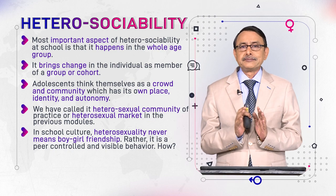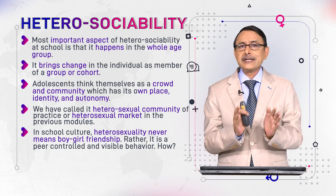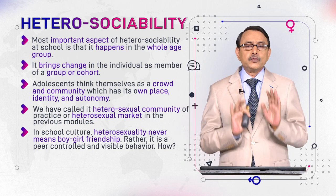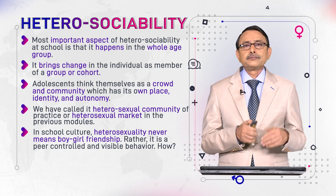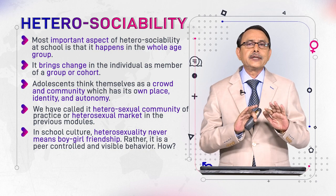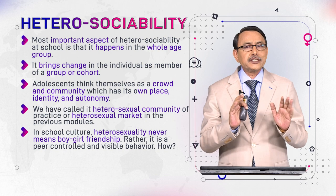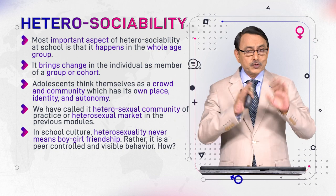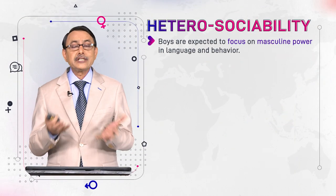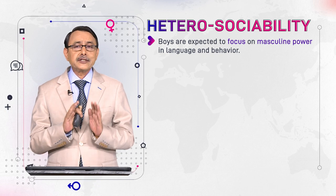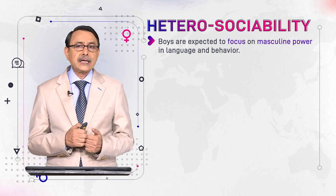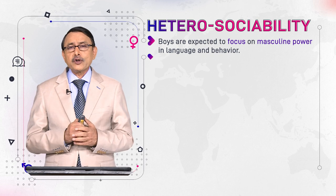If the peers and the group favour your behaviour, then it is acceptable. Otherwise they would tease you and try to desist you from your behaviour — that which is not in accordance with the norms and expectations of gender order. The group would resist it. Boys are expected to focus on masculine power, and if a person does not show masculinity and power, they hoot at that person because it is not according to the gender order.